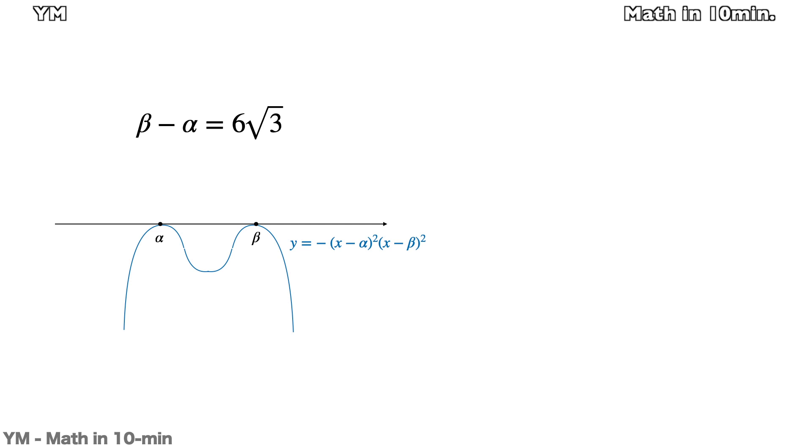The problem says that β - α is 6√3. So, to make the calculation easier, I will translate this graph so that α and β are translated to -3√3 and 3√3.